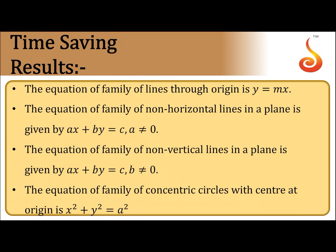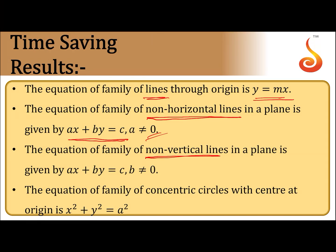The equation of the family of lines passing through the origin is y = mx. The equation of family of non-horizontal lines is ax + by = c (a ≠ 0), and non-vertical lines: ax + by = c (b ≠ 0). The equation x² + y² = a² represents a family of concentric circles centered at the origin with varying radius a.